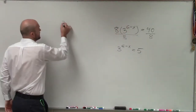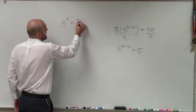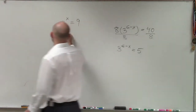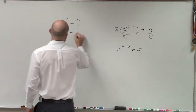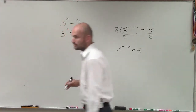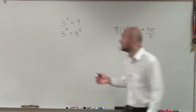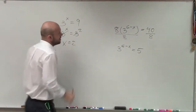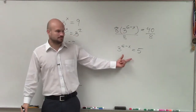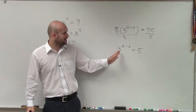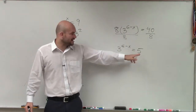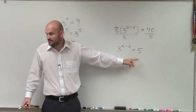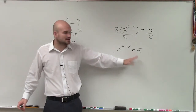If you guys remember, when we had 3x equals 9, by using our one-to-one properties, we could say that's the same thing as 3x equals 3 squared, and then x equals 2. But now we have a problem, because we can't raise 5 to the base 3 without getting some kind of number we'd have to solve for.